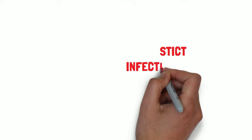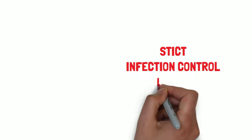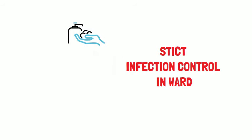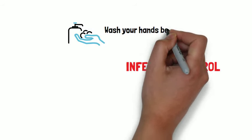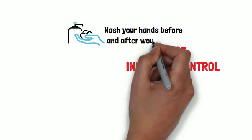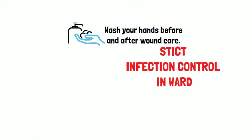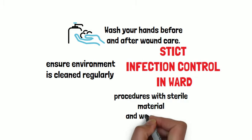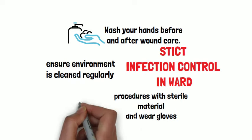Strict control of infection should be maintained in the ward and this includes washing hands before and after touching the patient and after care of the wound. Ensure the environment is also kept clean. Perform procedures such as removal of drains and catheters after hand washing and wearing sterile gloves.